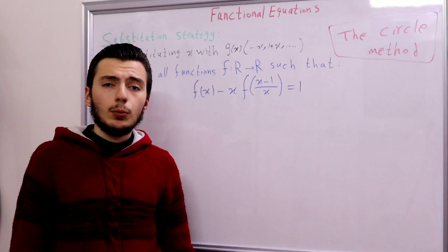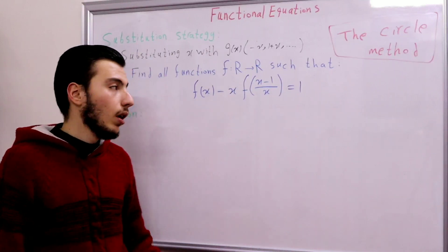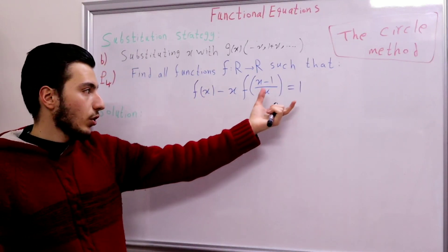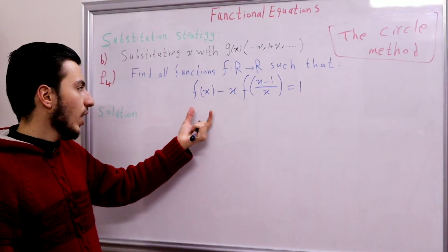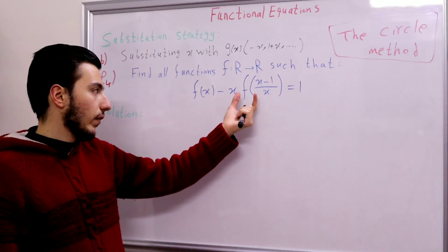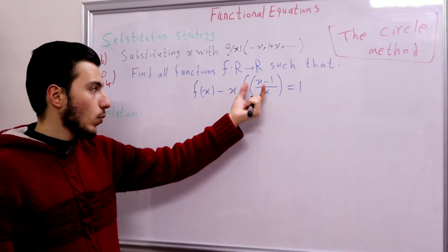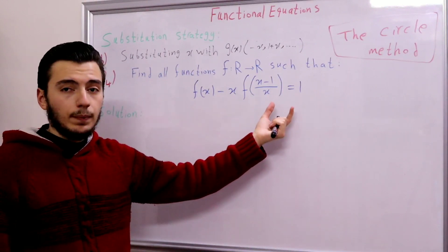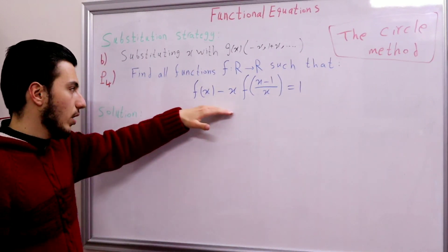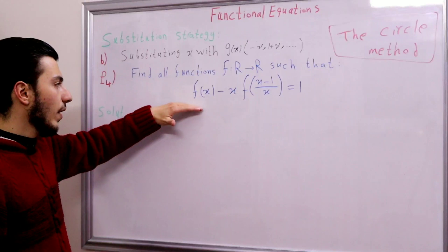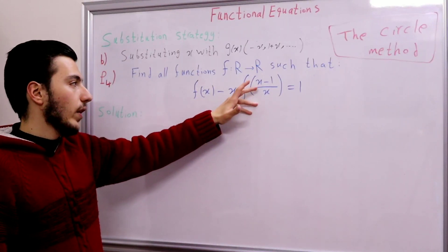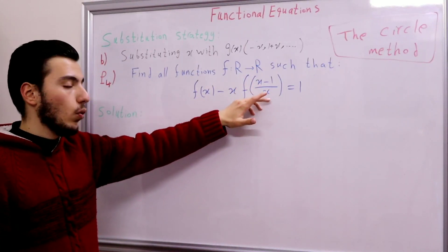Our problem statement is the following: find all functions f from ℝ to ℝ such that f(x) minus x times f(x minus 1 over x) equals 1. We can realize that f(x) is linked to f(x minus 1 over x).